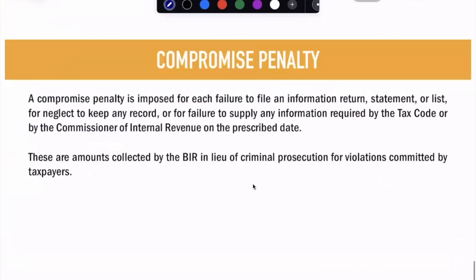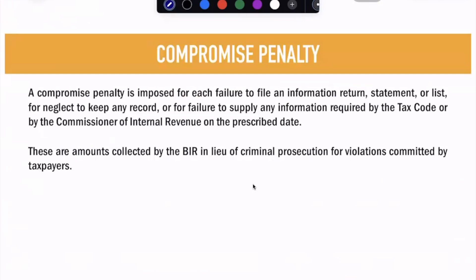Now we go to your compromise penalty. A compromise penalty is imposed for each failure to file an information return, statement, or list. As long as it is within your BIR Form 2303, you must file. If you did not file within those dates, you are subject to a compromise penalty. It is a tabular schedule of different penalties depending on your tax due or the nature of your infraction, collected by BIR in lieu of criminal prosecution.